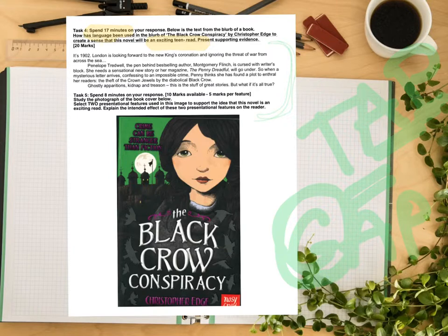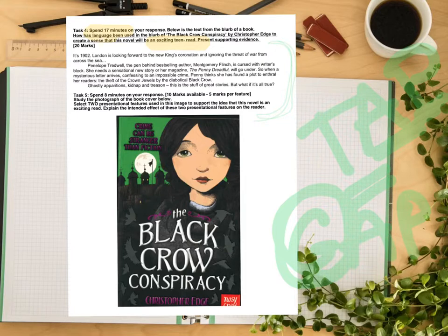It's 1902. London is looking forward to the new king's coronation and ignoring the threat of war from across the sea. Penelope Treadwell, the pen behind best-selling author Montgomery Flinch, is cursed with writer's block. She needs a sensational new story for her magazine, The Penny Dreadful, or her magazine, The Penny Dreadful, will go under. So when a mysterious letter arrives confessing to an impossible crime, Penny thinks she has found a plot to enthrall her readers — the theft of the crown jewels by the diabolical Black Crow. Ghostly apparitions, kidnap and treason. This is the stuff of great stories. But what if it's all true?